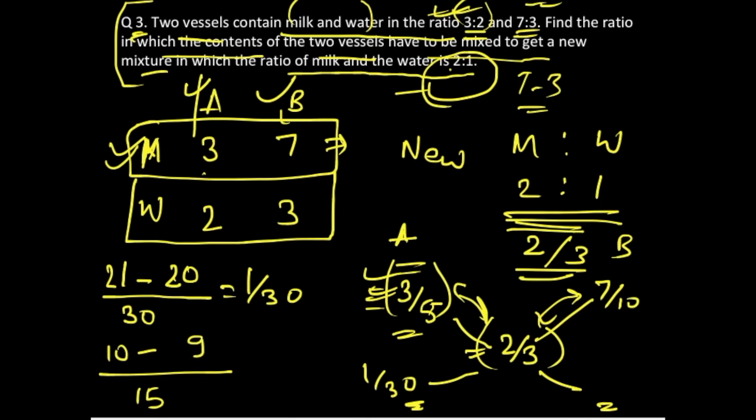This becomes 1/15, so you'll write 1/15 over here. The ratio of these two vessels, if mixed in this particular format, will give you the final ratio of milk and water in 2:1.